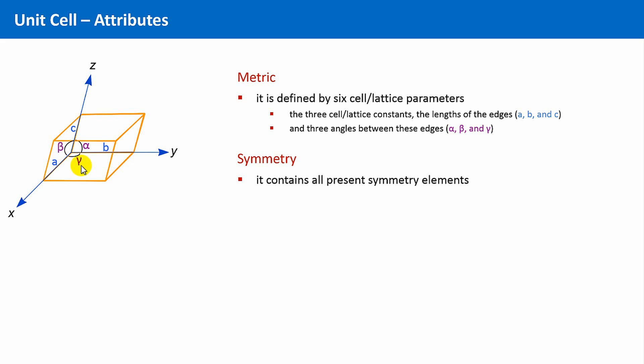If then, suddenly, a symmetry element appeared that was not in your initially chosen unit cell, then you would have chosen a too small piece of a crystal as the unit cell. And this means in turn, the symmetry aspect defines in a way the minimum size of a unit cell.